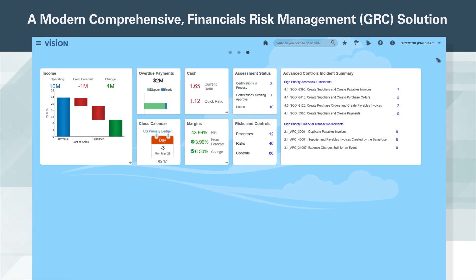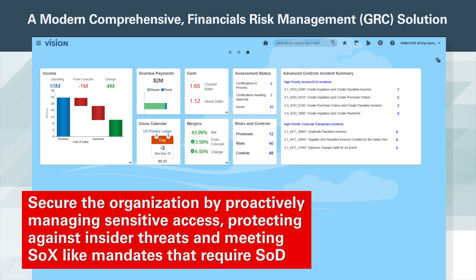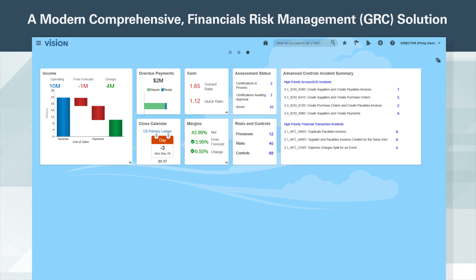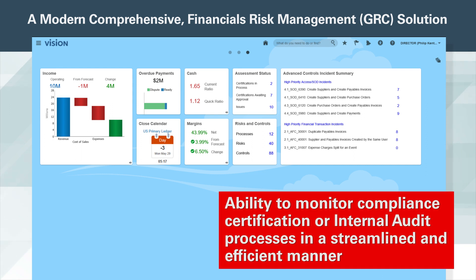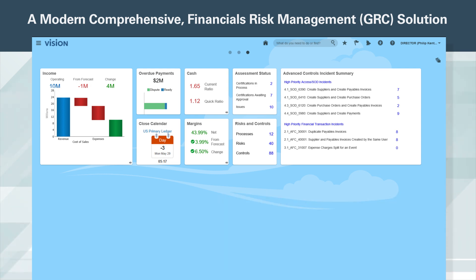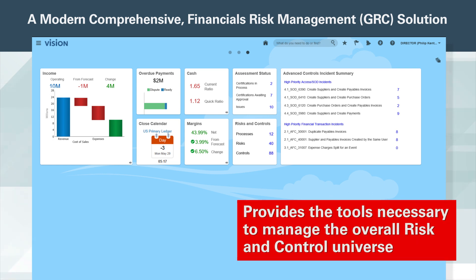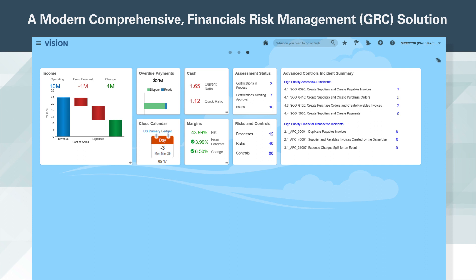By now you have seen that using Risk Cloud, an audit team is able to deploy advanced controls to secure the organization by proactively managing sensitive access, protecting against insider threats and meeting SOX-like mandates that require SOD, and monitoring ERP transactions to stop cash leakage from fraud, error, and process inefficiencies. We also saw the ability to monitor compliance certifications and internal audit processes in a streamlined and efficient manner, and use workflow to delegate compliance tasks and facilitate a culture of risk awareness. Oracle Risk Cloud provides the tools necessary to manage the overall risk and control universe, including control certifications, mitigating controls, automated access and transaction controls, and management comments on incidents.